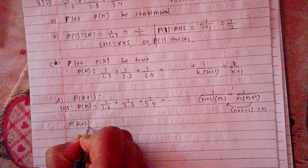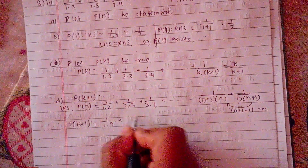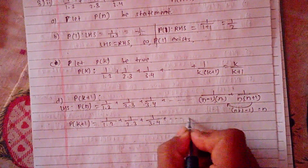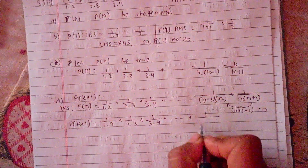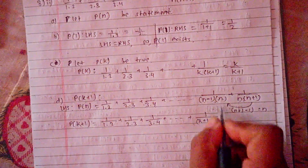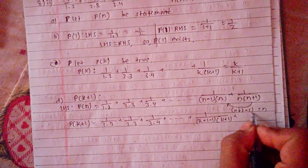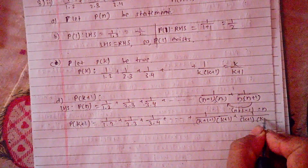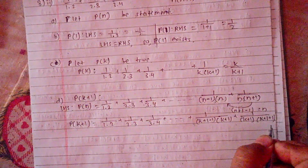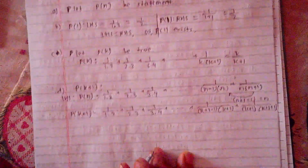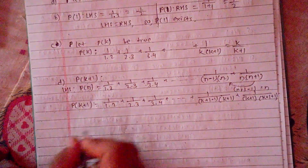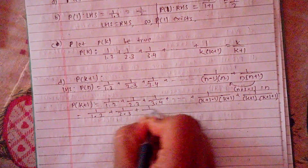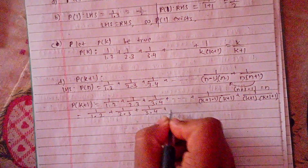So the LHS of P(k+1) is: 1/(1·2) + 1/(2·3) + 1/(3·4) + ... up to n = k+1. We use the P(k) assumption and add the next term 1/((k+1)(k+2)).